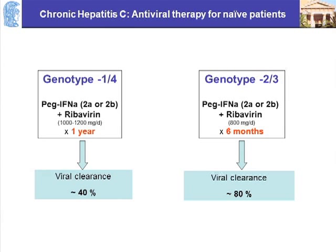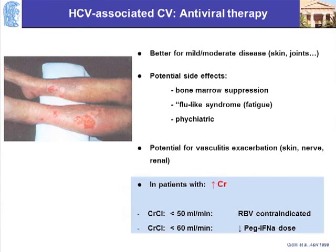The standard of care today is pegylated interferon-alpha and ribavirin. If you have genotype 2 and 3, most of the time you can clear the virus — about 80% of the time. But patients with genotype 1, the most common genotype in the United States, only 40% are able to clear the virus. When you give interferon-alpha in these patients, you have to worry about bone marrow suppression and cytopenias.